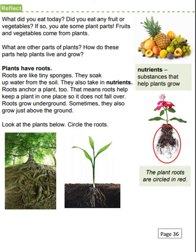Plants have roots. Roots are like tiny sponges. They soak up water from the soil. They also take in nutrients. Roots anchor a plant too — that means roots help keep a plant in one place so it does not fall over. Roots grow underground. Sometimes they also grow just above the ground.